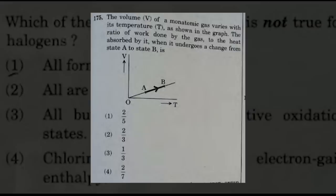The next question: the volume V of a monatomic gas varies with its temperature T as shown in the graph. The ratio of work done by the gas to the heat absorbed by it when it undergoes a change from state A to B is — the suggested answers are options 1 and 4: option 1 is 2/5 and option 4 is 2/7.